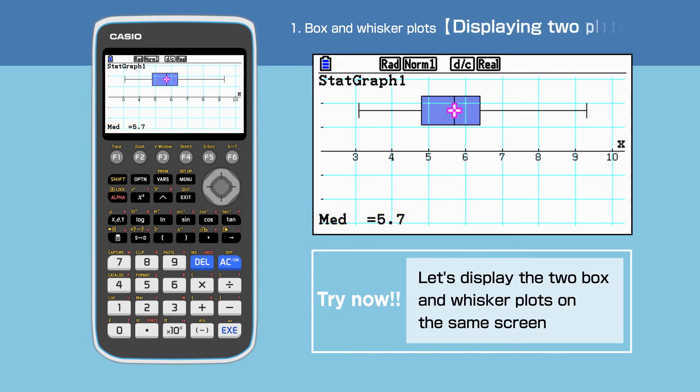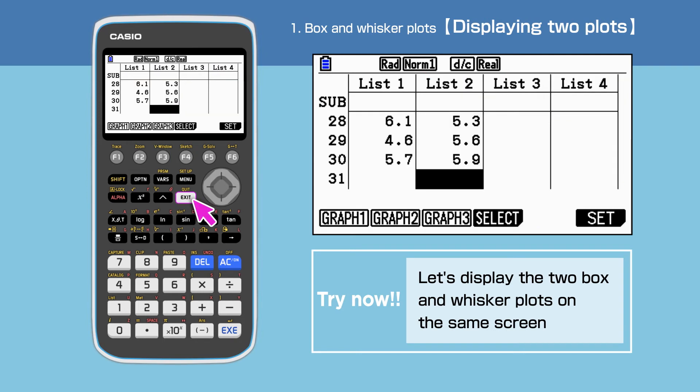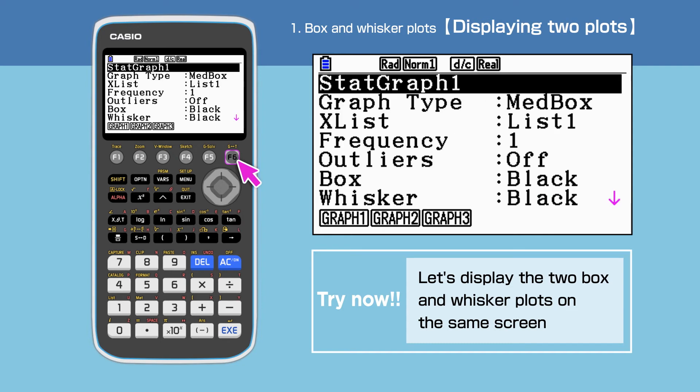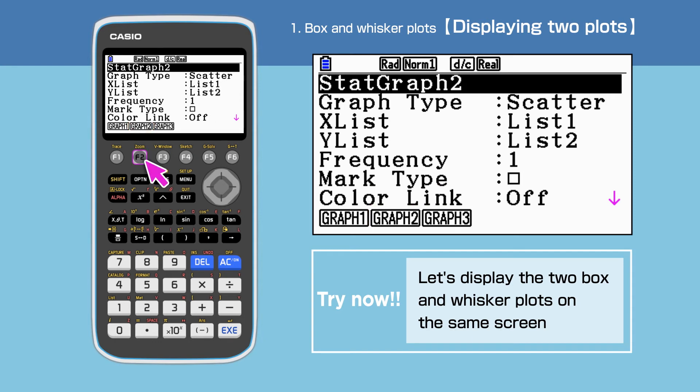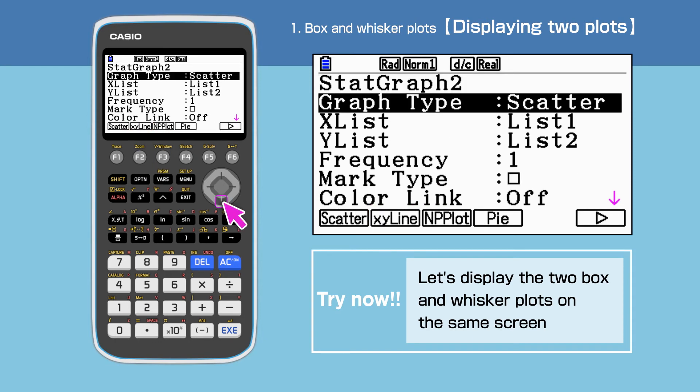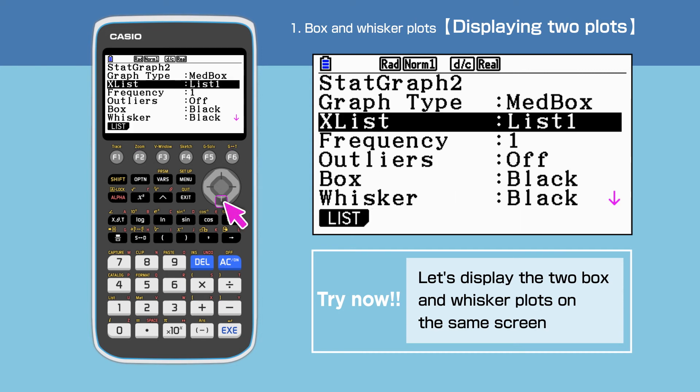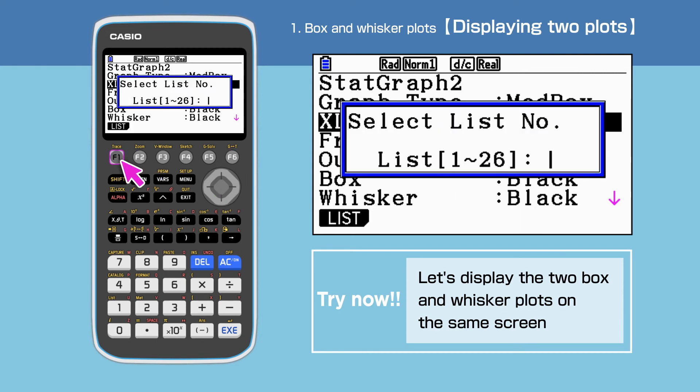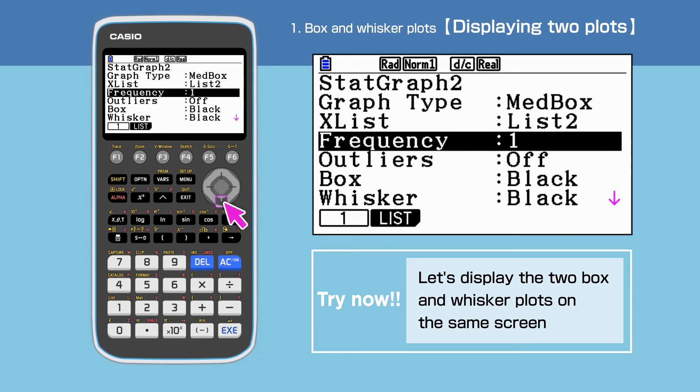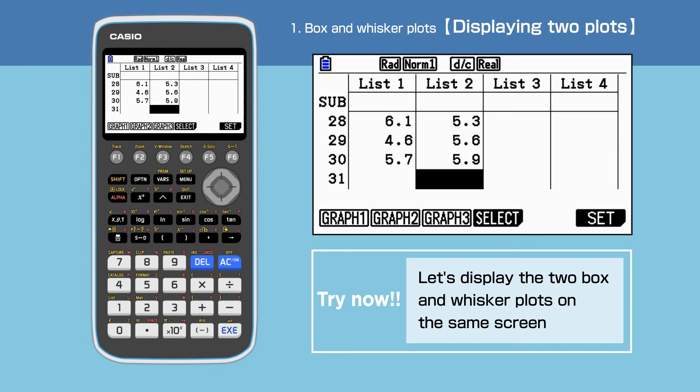We will repeat the same process with company B. Press exit, then F6 to set up. Choose F2 to display stat graph 2. Graph type is med box. X list is list 2, and the frequency is 1. Press exit to end setting.